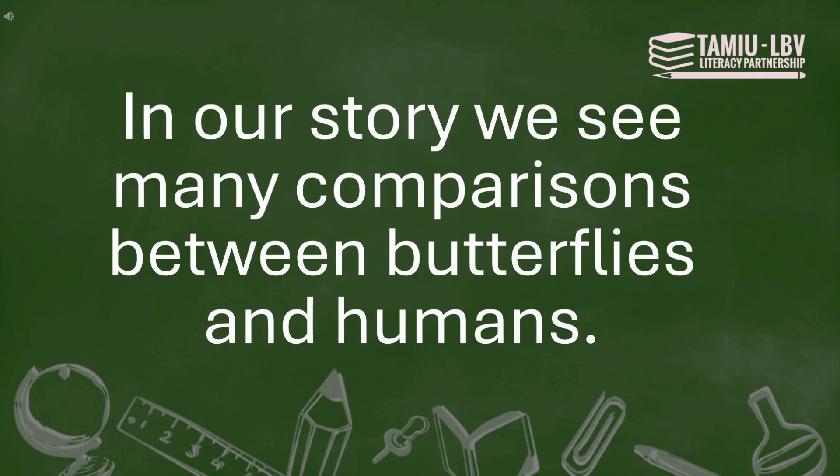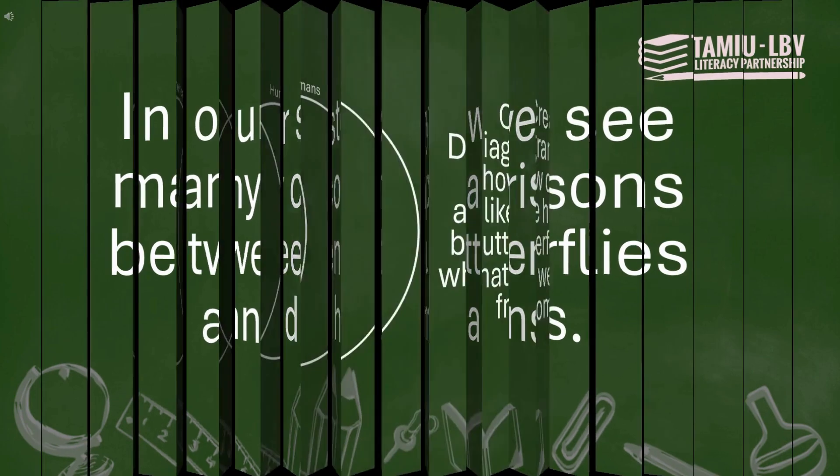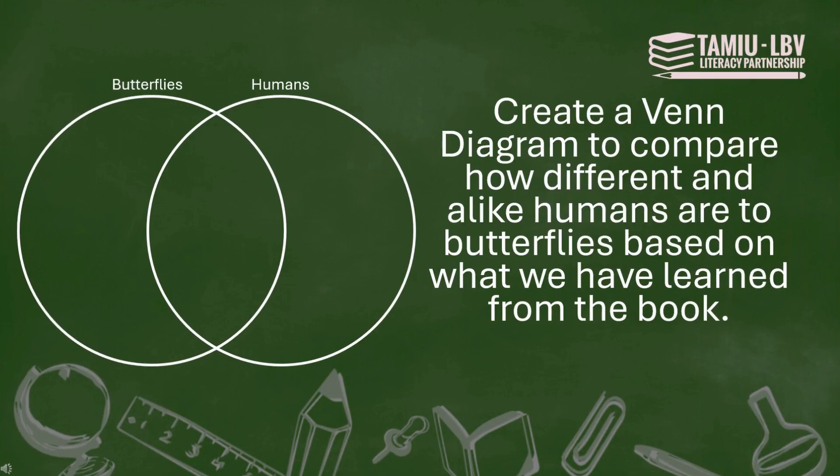In our story, we see many comparisons between butterflies and humans. Create a Venn diagram to compare how different and alike humans are to butterflies, based on what we have learned from the book.